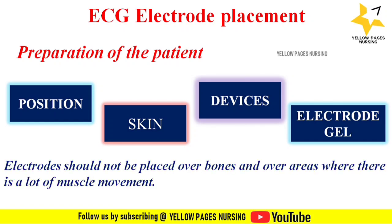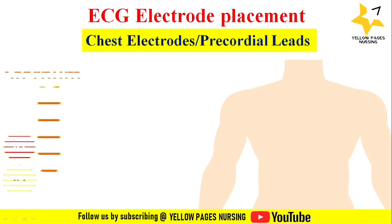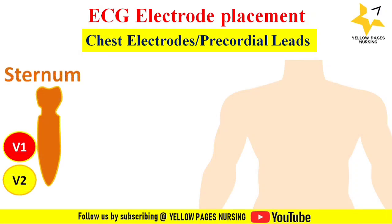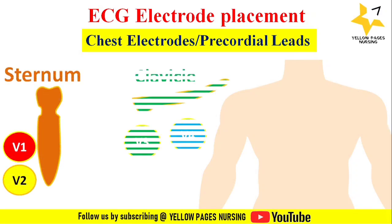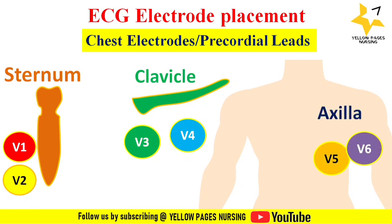For placement of ECG chest electrodes, remember three important anatomical landmarks: the sternum for V1 and V2, the clavicle for V3 and V4, and the axilla for V5 and V6.